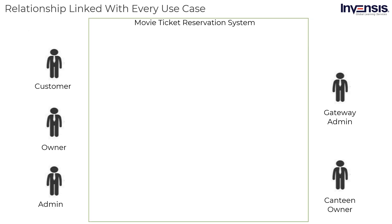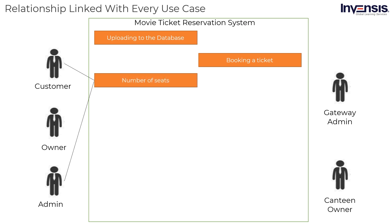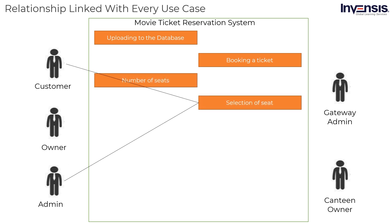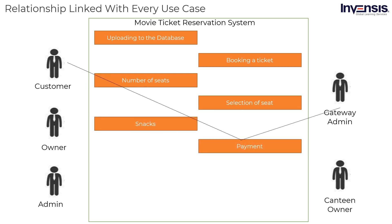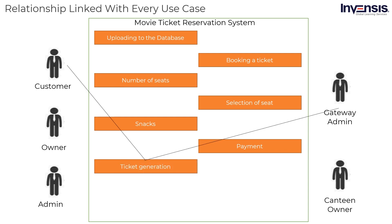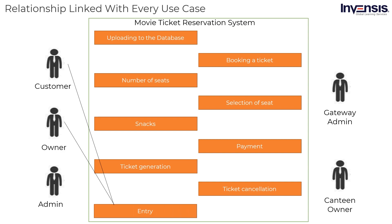Now you have seen all the use cases. Let us look at the relationships linked in every use case: uploading to the database — administrator and owner; booking a ticket — customer and administrator; number of seats — customer and administrator; selection of seat — customer and administrator; snacks — customer and canteen owner; payment — customer and gateway; ticket generation — gateway and customer; ticket cancellation — customer and gateway; entry — customer and owner.